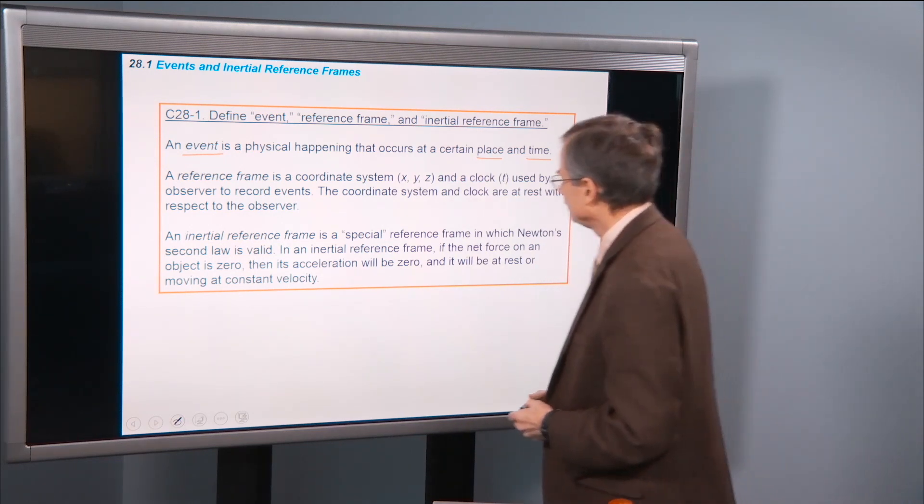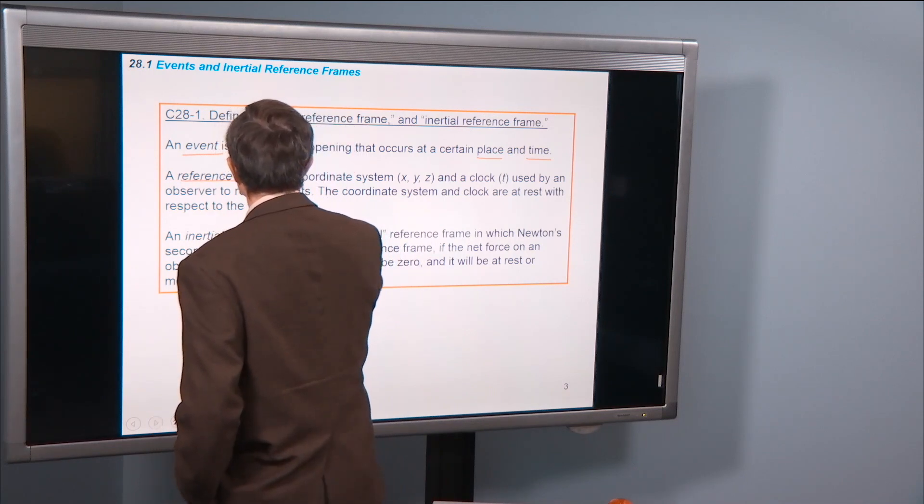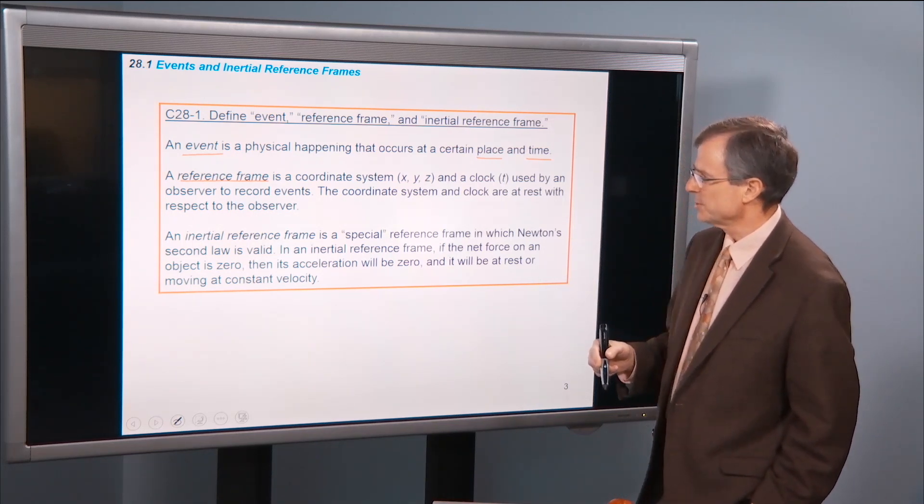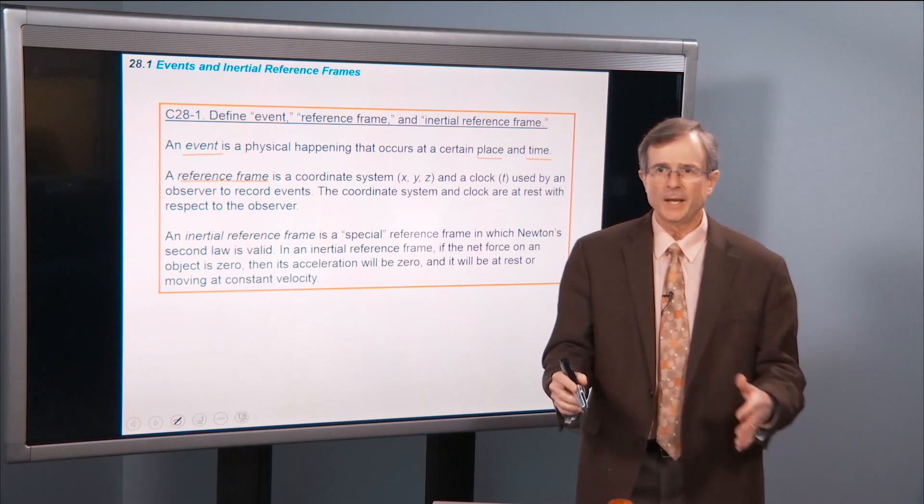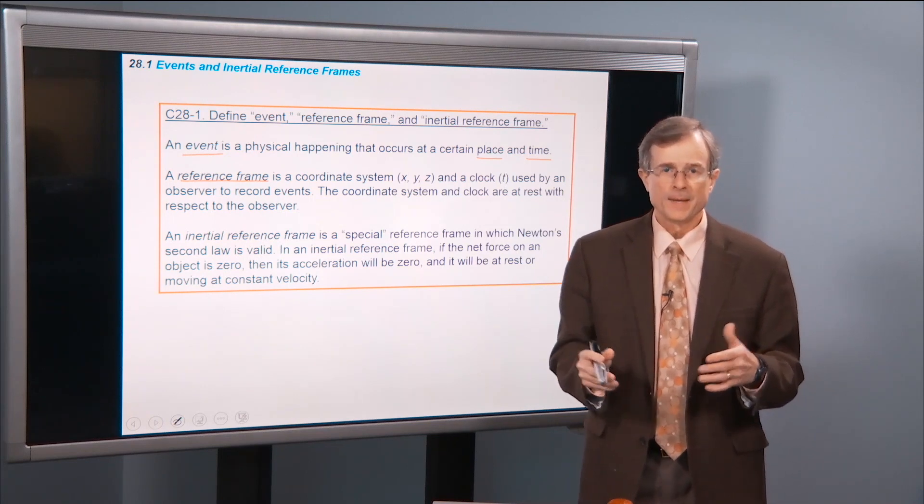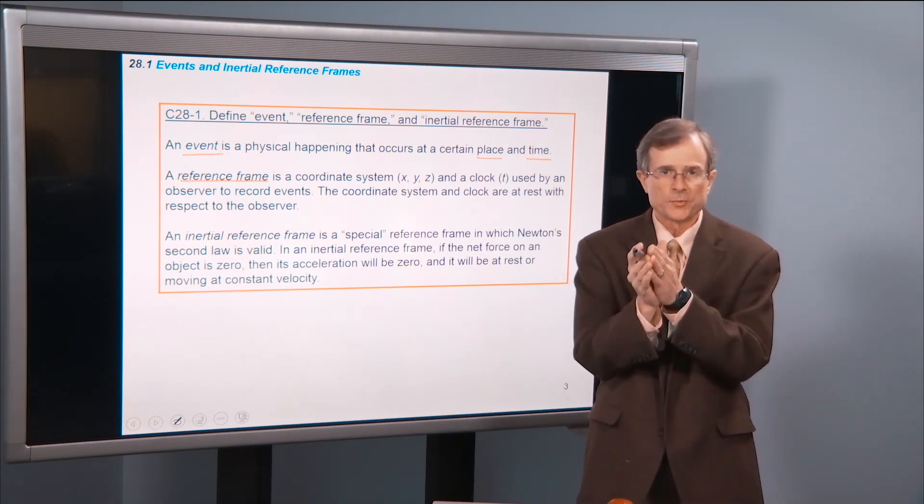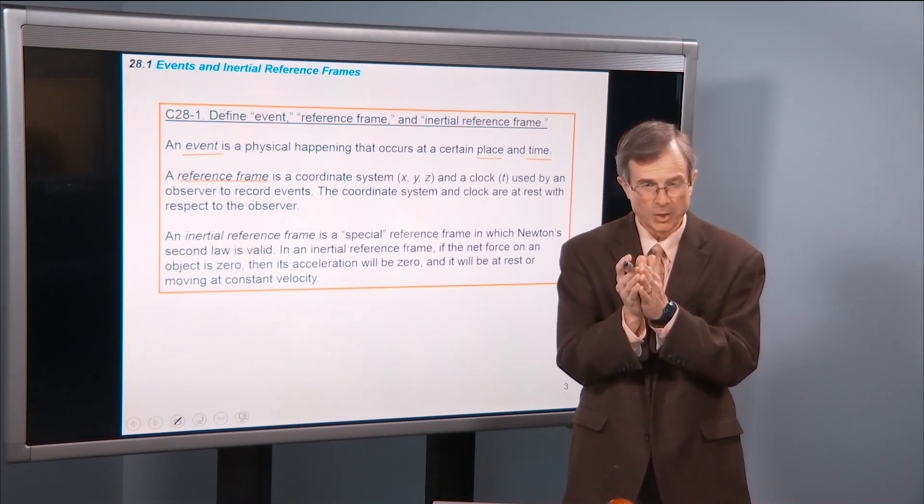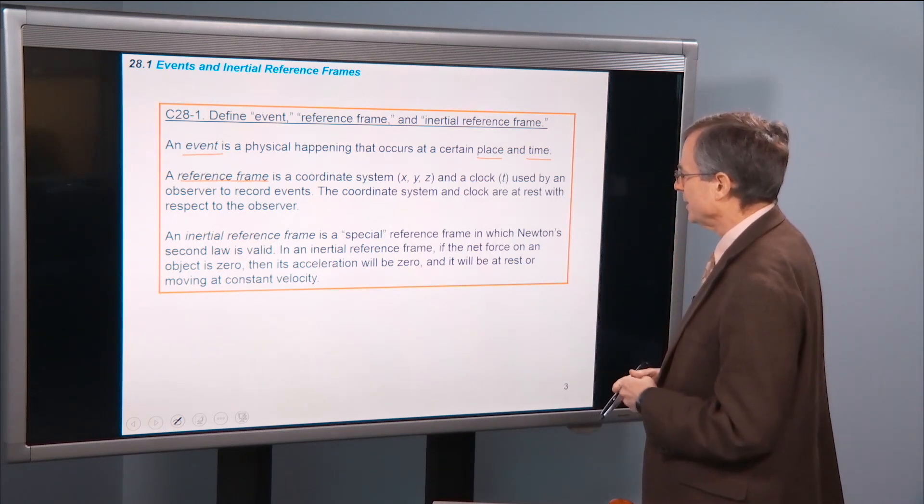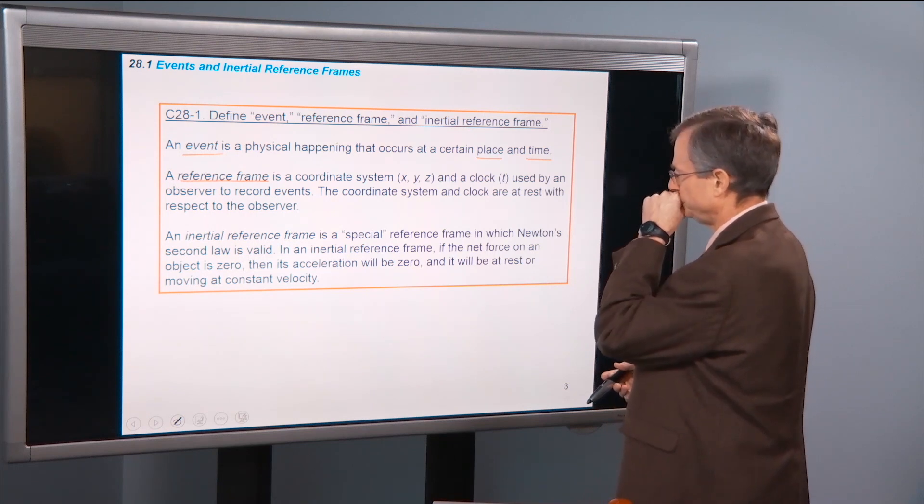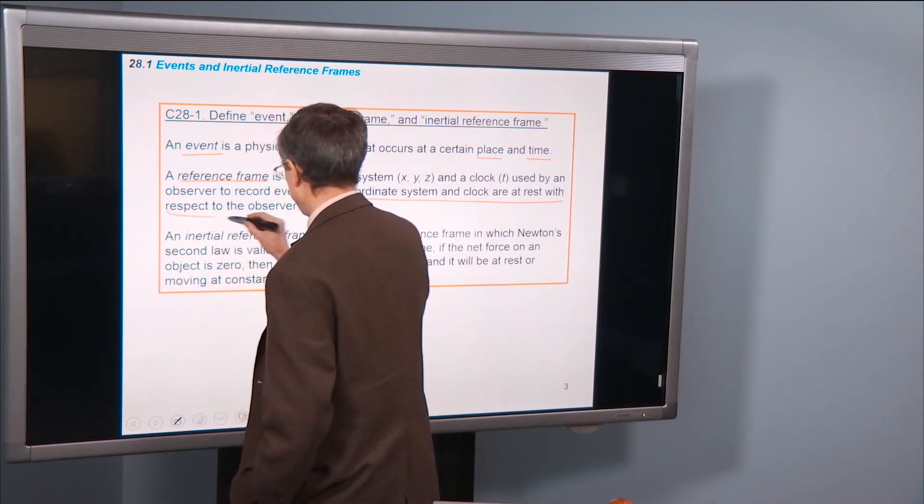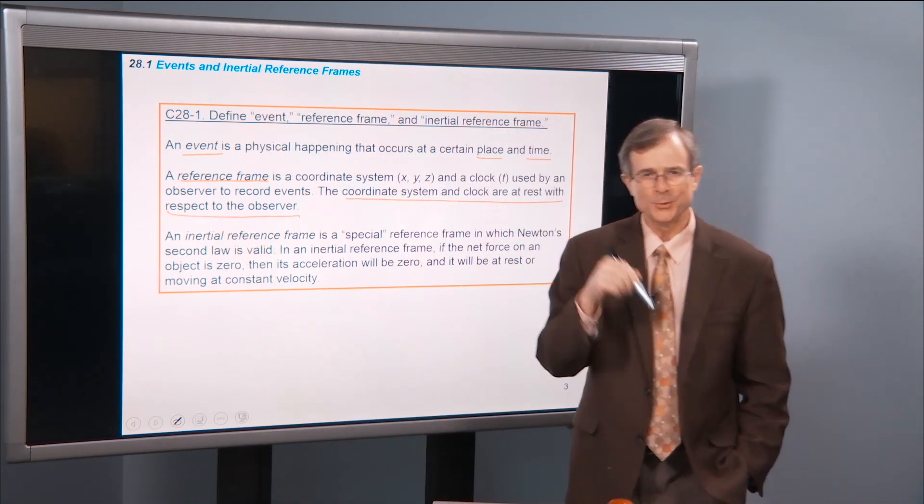A reference frame is a coordinate system, x, y, z, and a clock used by an observer to record events. So I could have an x, y, z coordinate system set up somewhere and then measure the x, the y, and the z values for the locations of my hands where that event occurred. And then on my clock we already gave you the value of the time at which it occurred. So that's a reference frame.